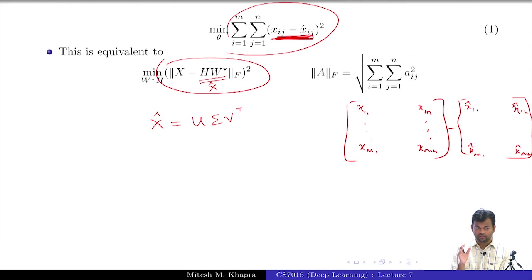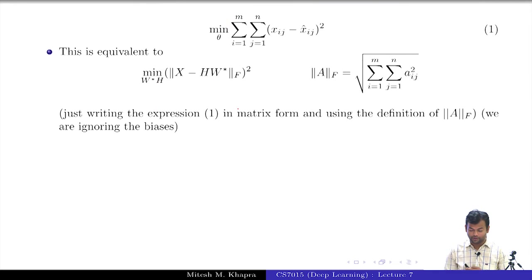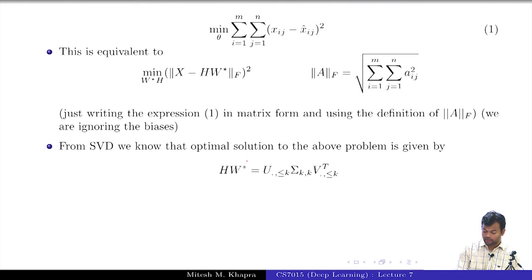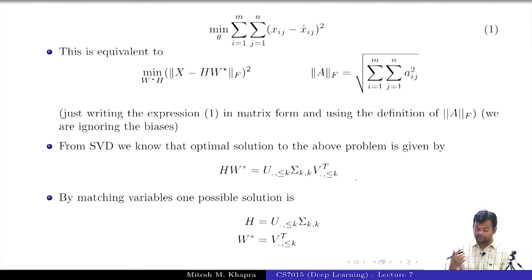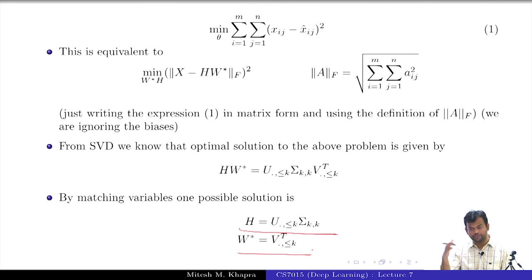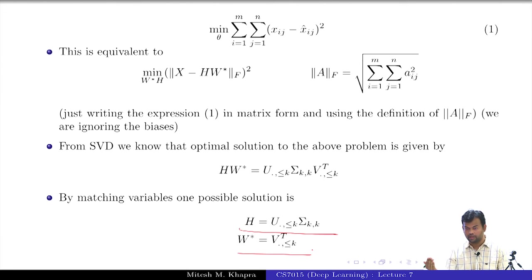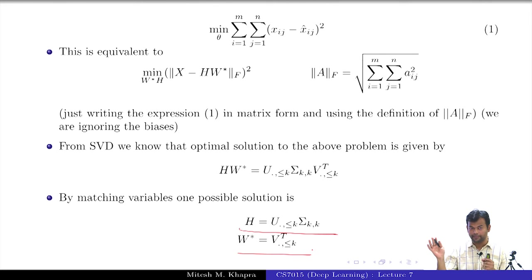So if I just compare terms, then one solution is that H equals U times Sigma and W-star equals V-transpose. I could have chosen another solution where H equals U and W-star equals Sigma V, but I will work with this particular solution. I am just matching variables: if AB equals CDE, I say A equals CD and B equals E.